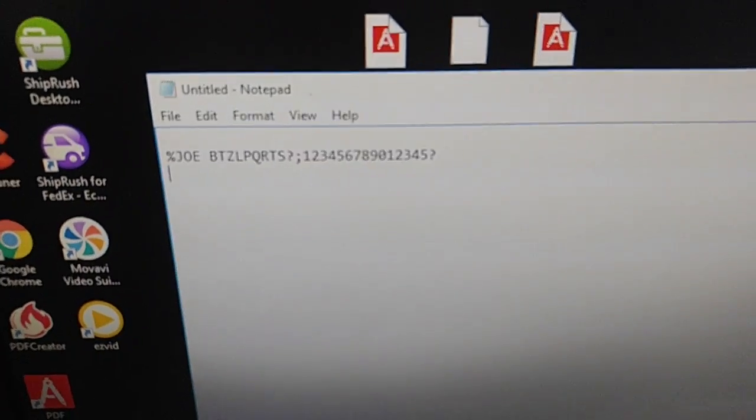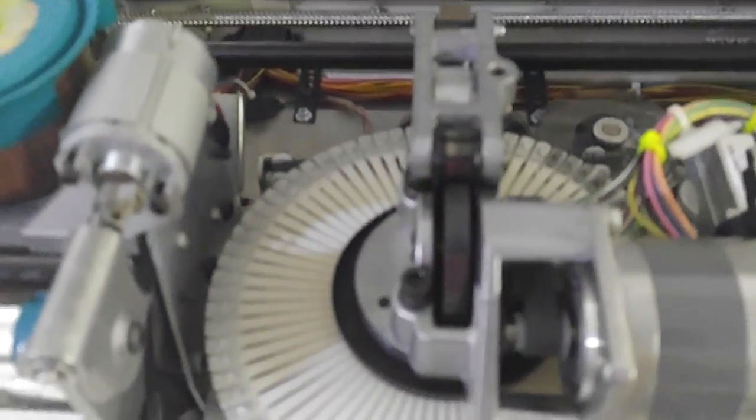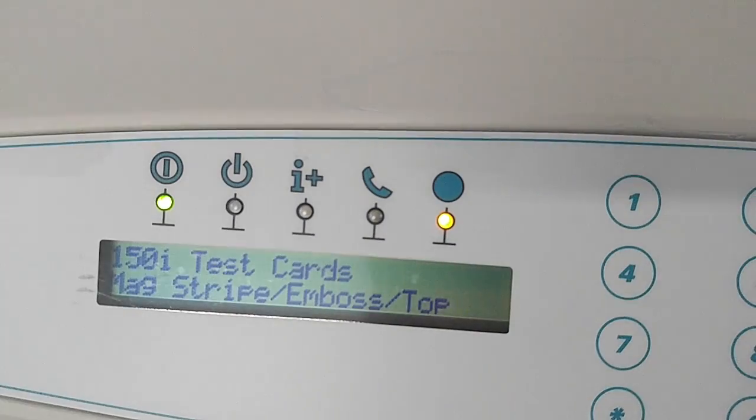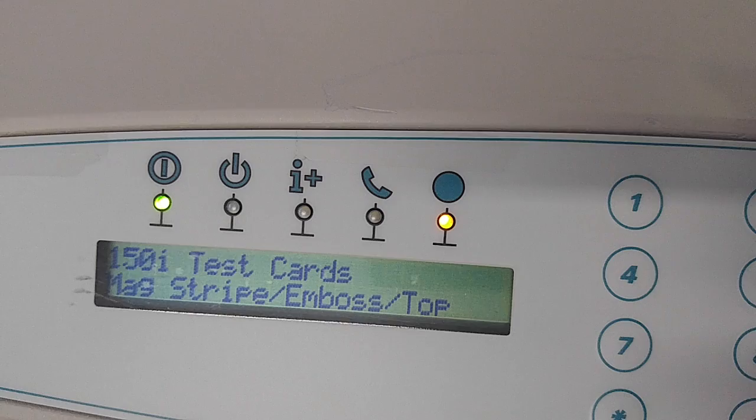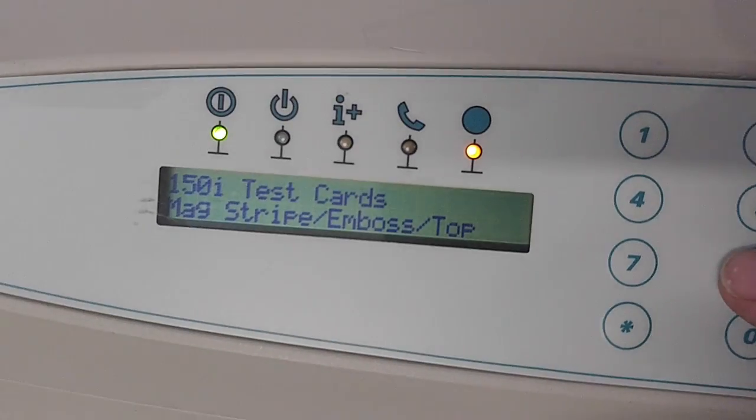And so we know that the encoder, embossing, and the topper are working. So now we can go back to the menu.